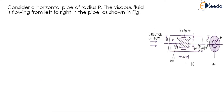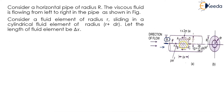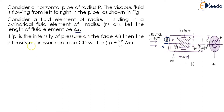Consider a horizontal pipe of radius R; the viscous fluid is flowing from left to the right in the pipe as shown in the figure. The radius is given as R and the direction of flow is from left towards right. Consider a fluid element of radius r sliding in a cylindrical fluid element of radius r plus dr. Let the length of the fluid element be delta x. If p is the intensity of pressure on face ab, then the intensity of pressure on face cd will be p plus del p upon del x multiplied by delta x.